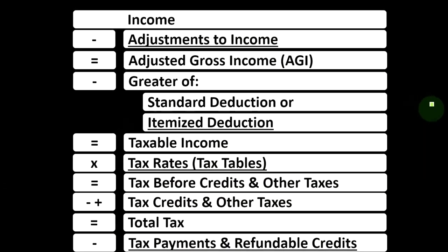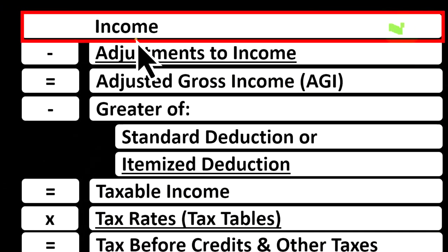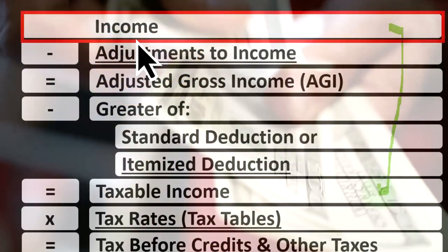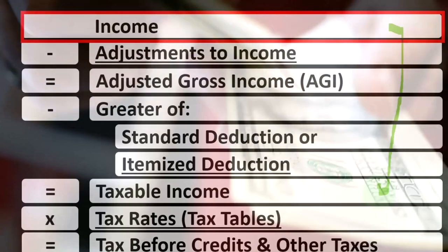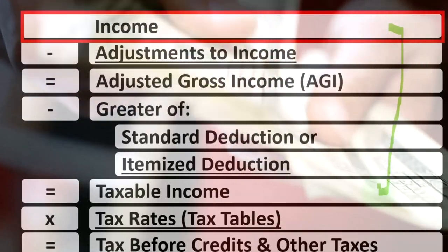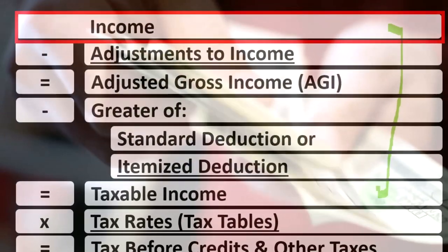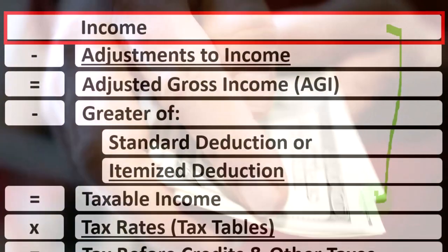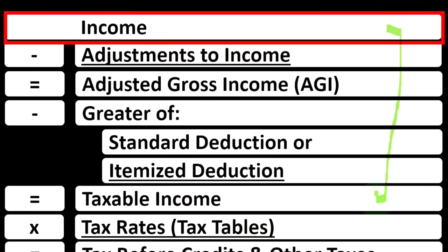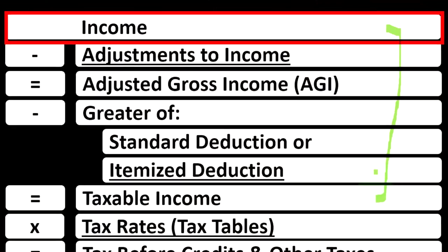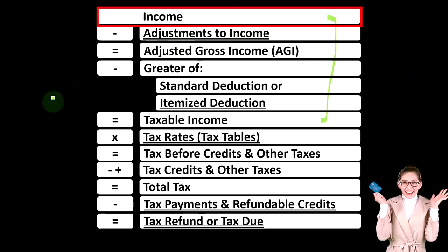Looking at the income tax formula focused on line one income, and remembering the first half of the income tax formula is in essence an income statement — just an outline — with other forms and schedules flowing into these line items. One of those is the Schedule C, having business income minus business expenses, giving the business net income flowing from the Schedule C to line one of income on the income tax formula.